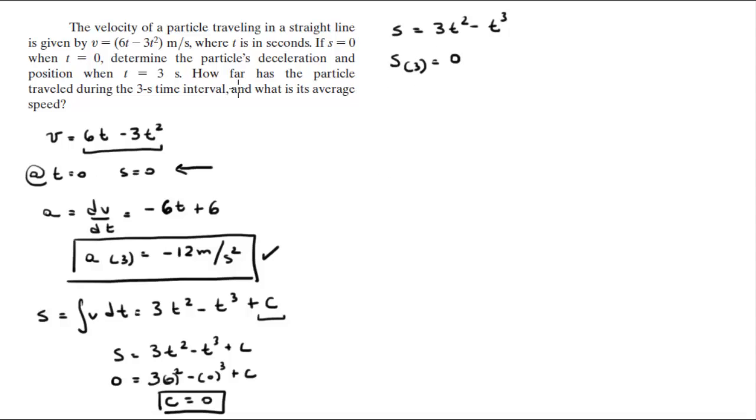Now, they're asking us how far has the particle traveled during this 3 second interval. For that we need to find when v equals 0 first. Whenever they're asking when an equation equals 0, I like to factorize it, makes it much easier and more intuitive. I'm going to factor out the 3t and get 3t times (2 minus t). This is equal to 0 when t equals 0 or when t equals 2.